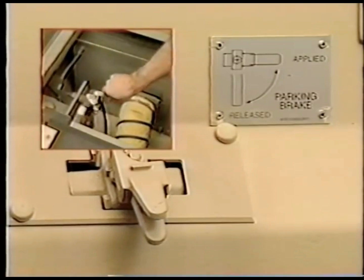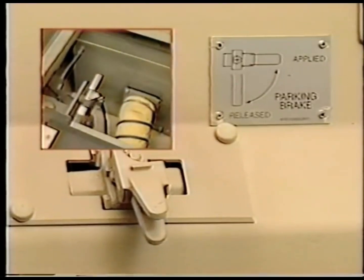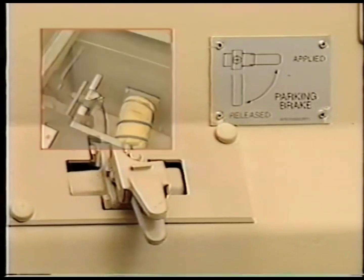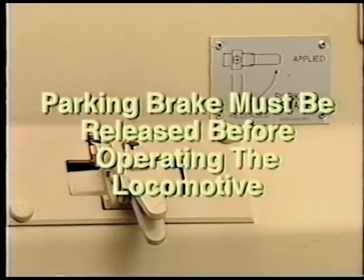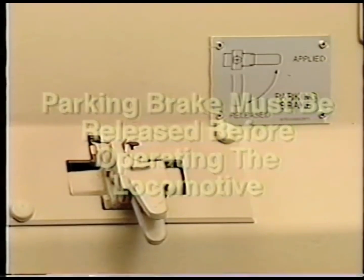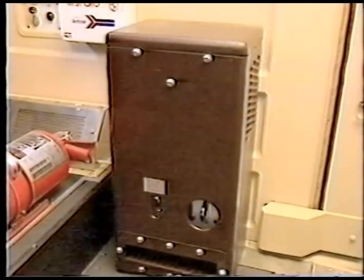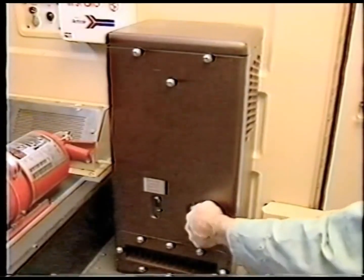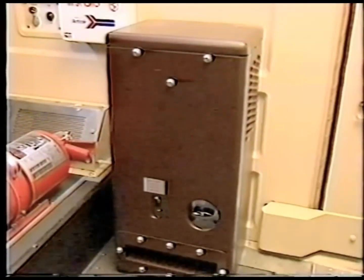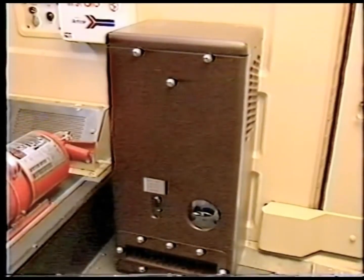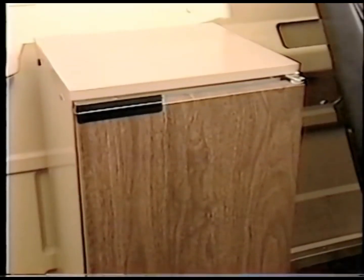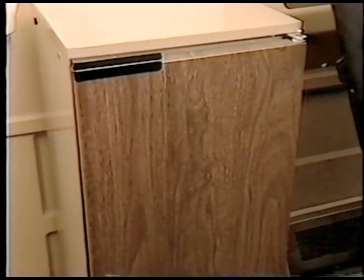The dead engine feature also can be cut in to release the parking brake if the brake pipe pressure is above 90 psi. The parking brake must be released before operating the locomotive. The auxiliary cab heater provides additional heating when required, such as during cold morning start-ups. The refrigerator, powered by 110 volts AC, functions when the head-end power is operating.